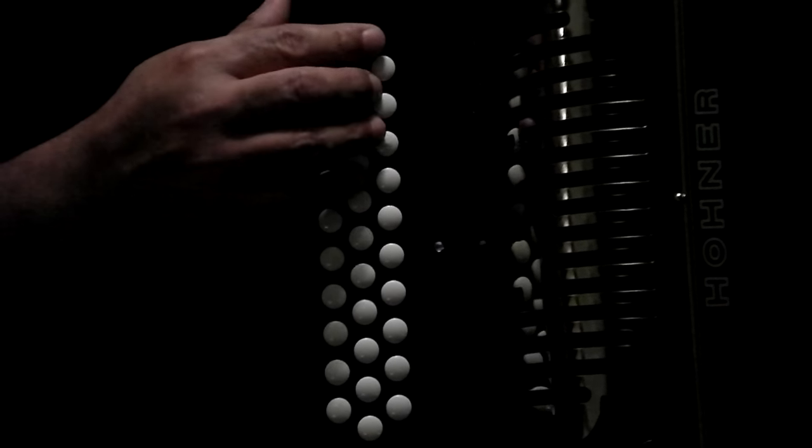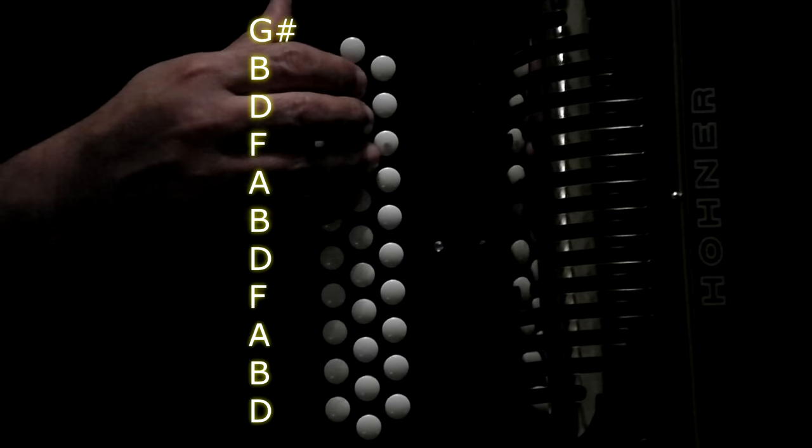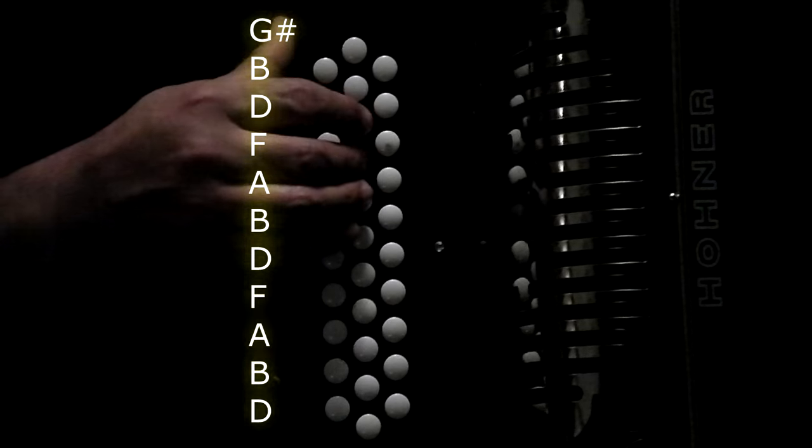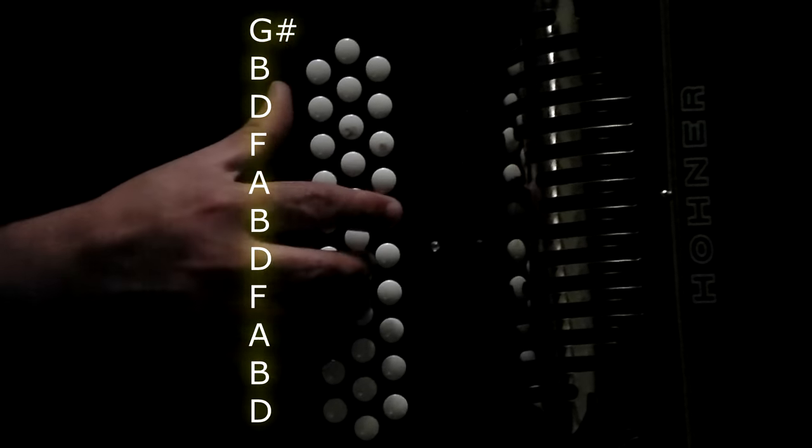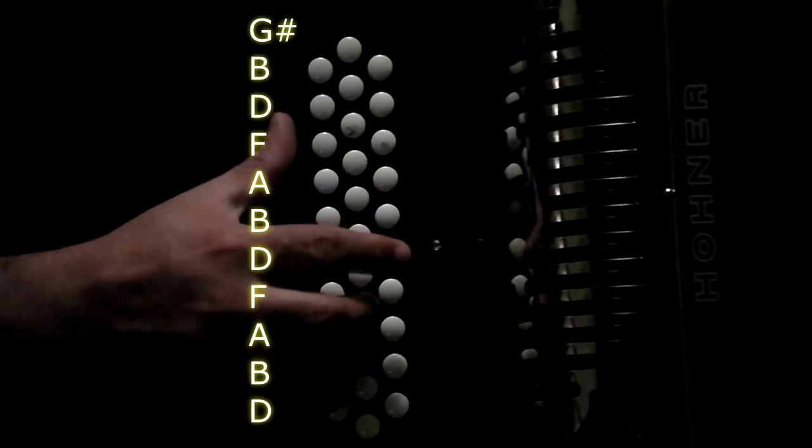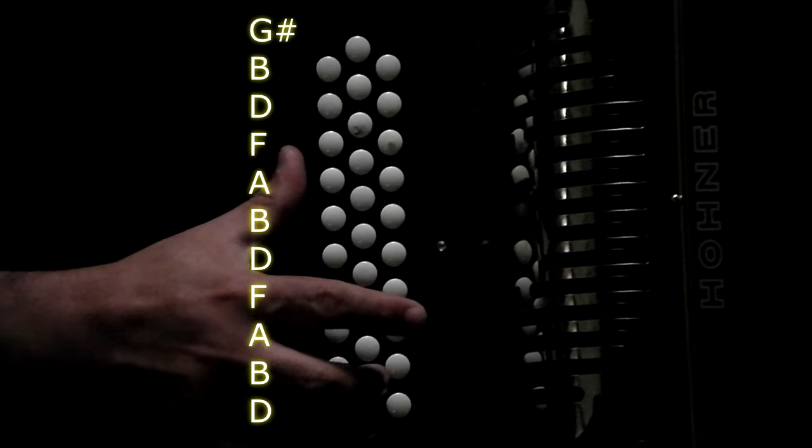Second row. Going out still. G sharp, B, D, F, A, B, and D.